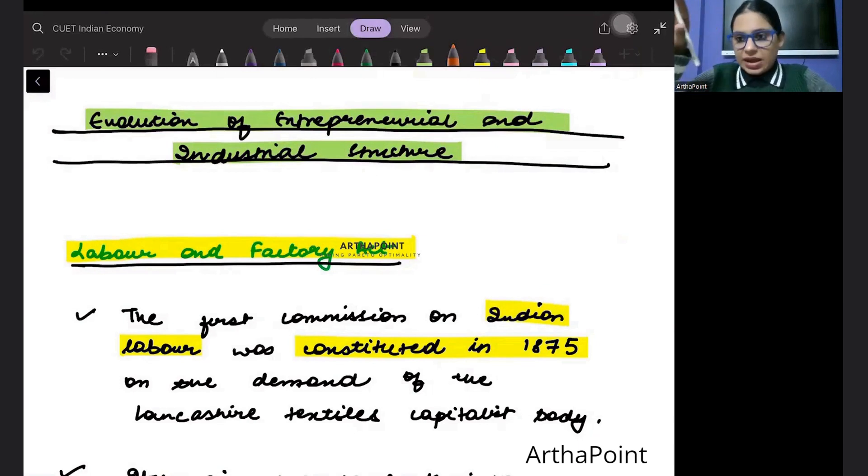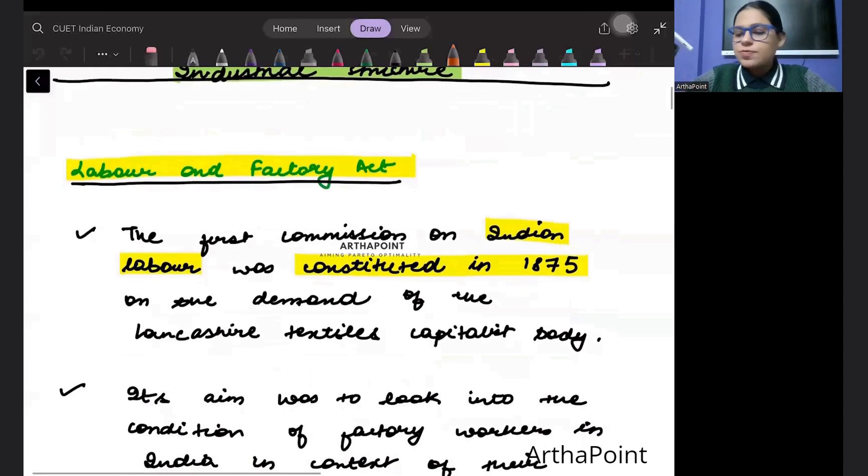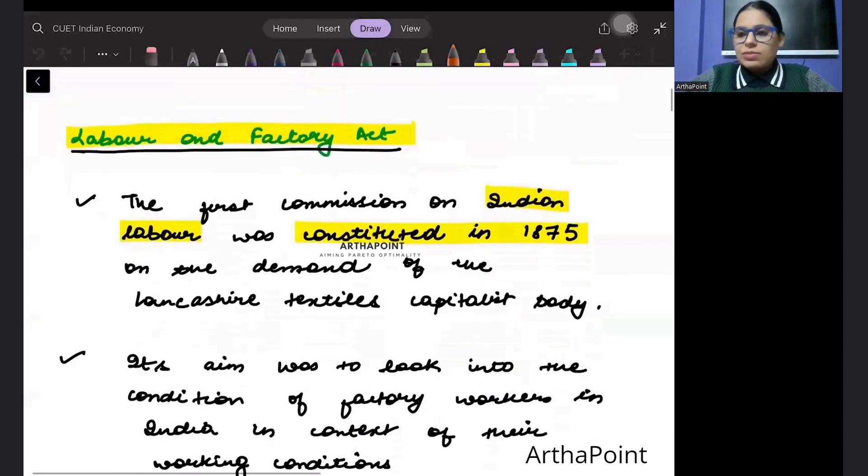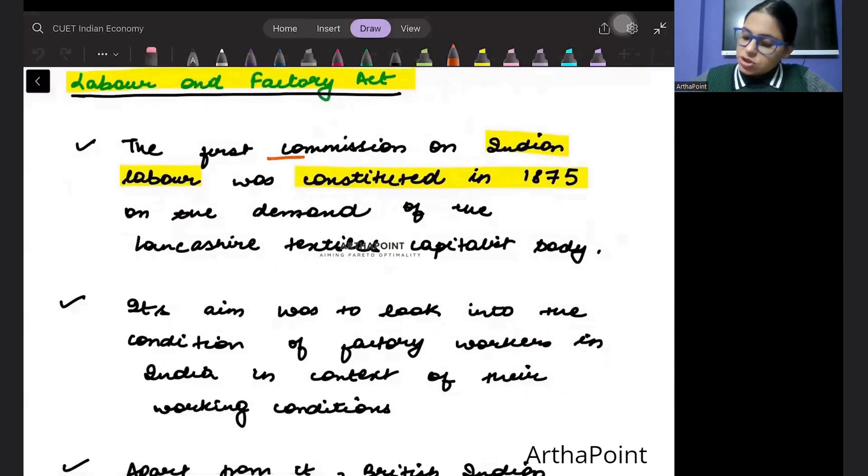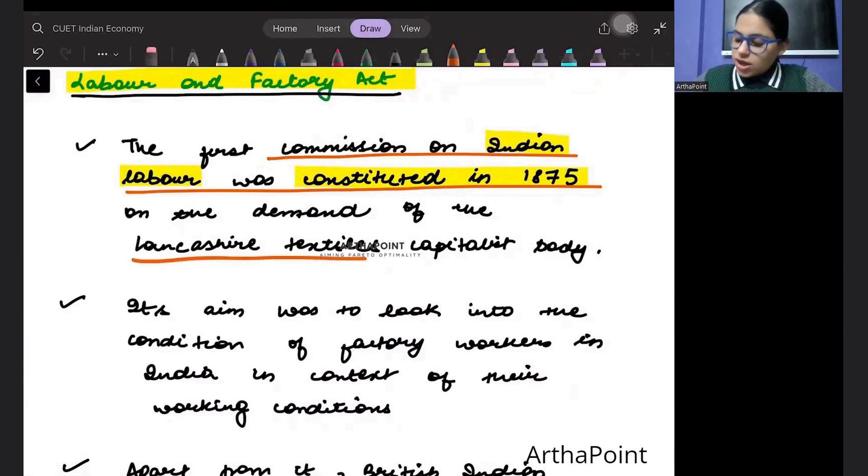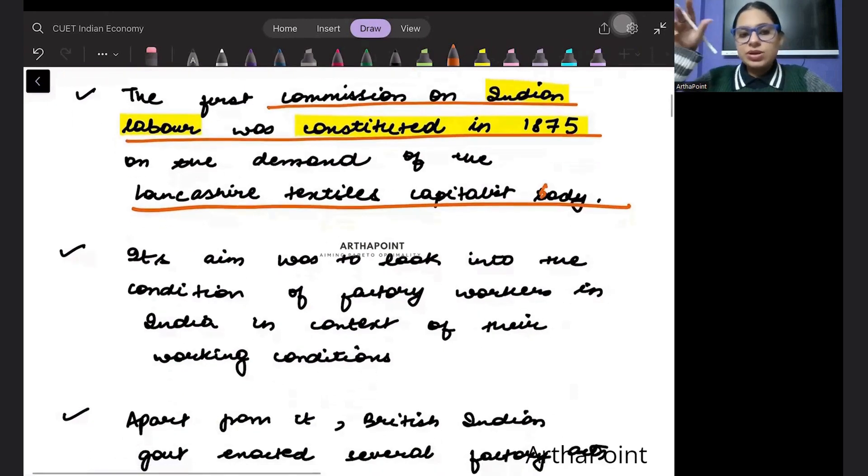This was India's first labor-oriented commission. We know that labor class was always over exploited. In order to see how labor will be taken care of and what will be the condition of factory workers, this act came into picture. The first commission on Indian labor was constituted in 1875 on the demand of Lancashire textiles capital body, creating this labor union.